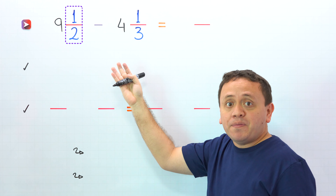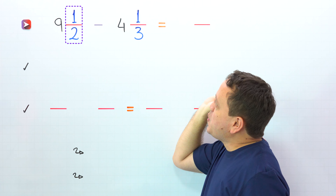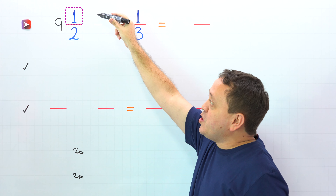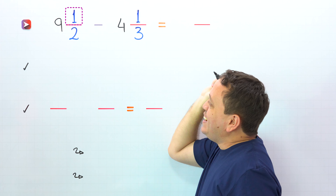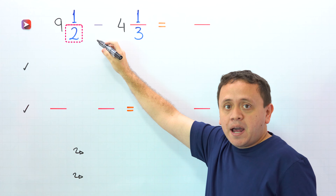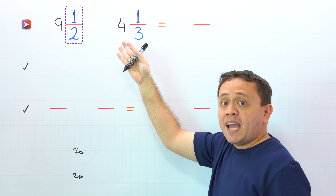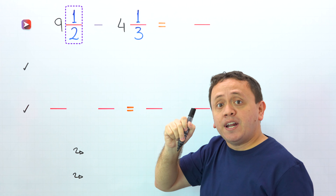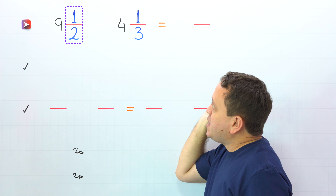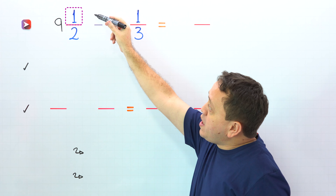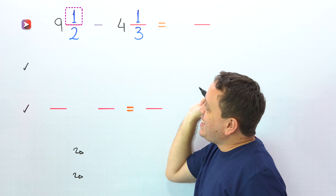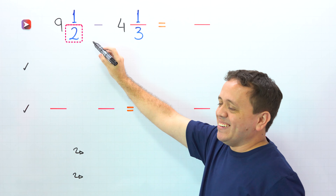Also, a proper fraction is a fraction where the numerator, the top number, is less than the denominator, the bottom number. 1 half is a proper fraction, given that the numerator 1 is less than the denominator.